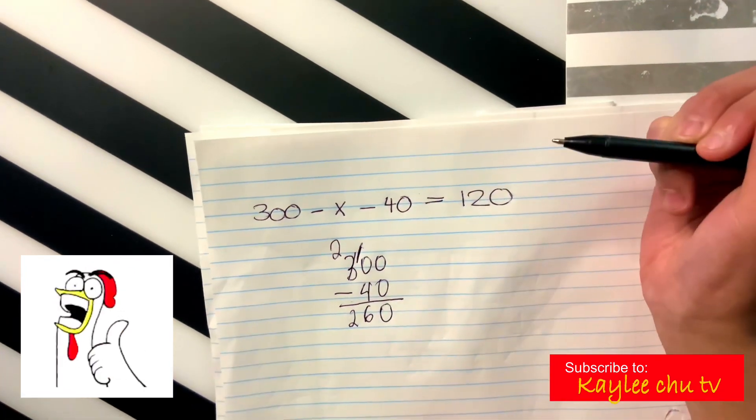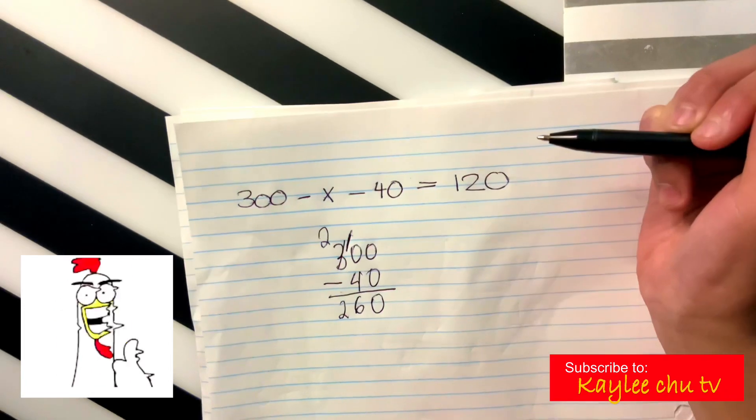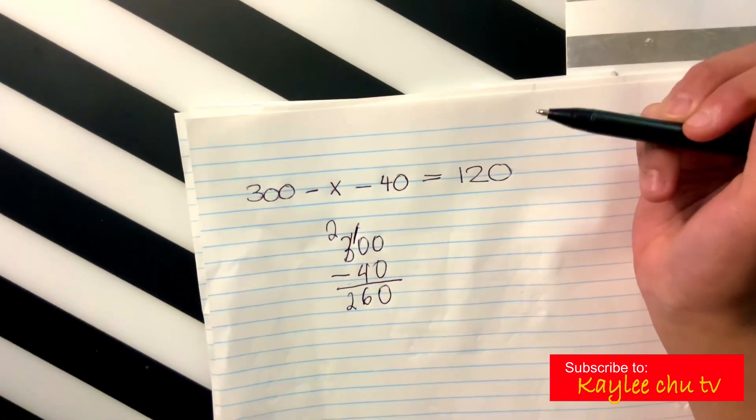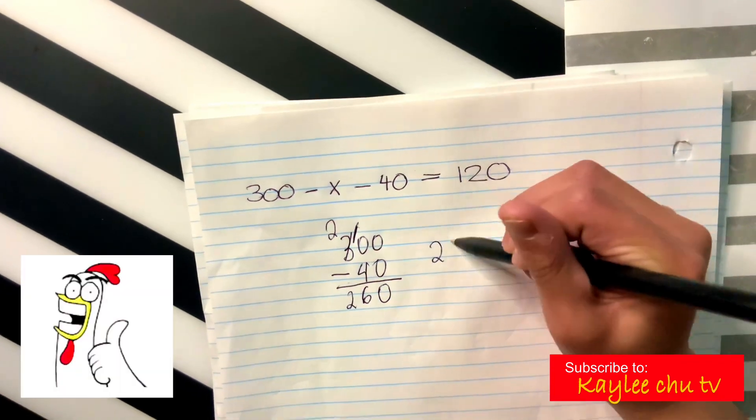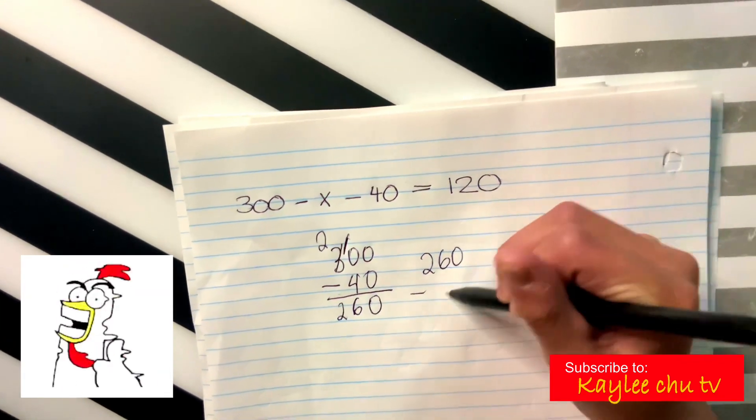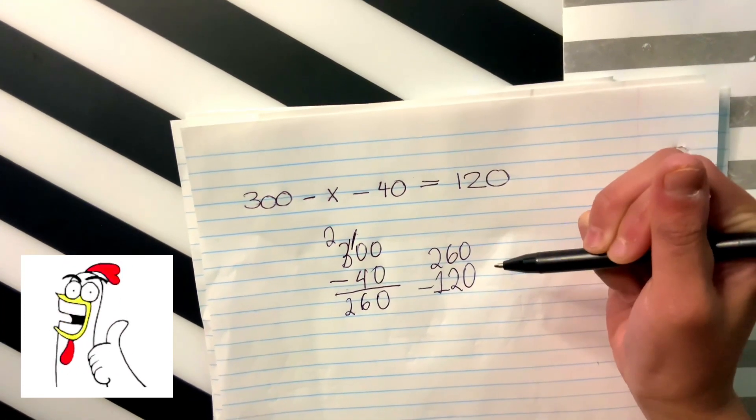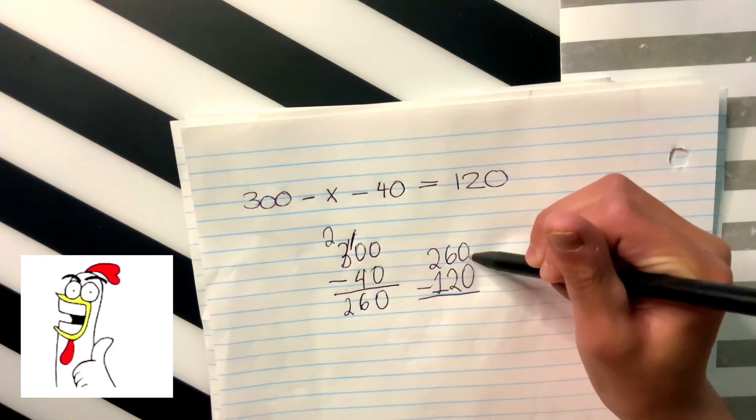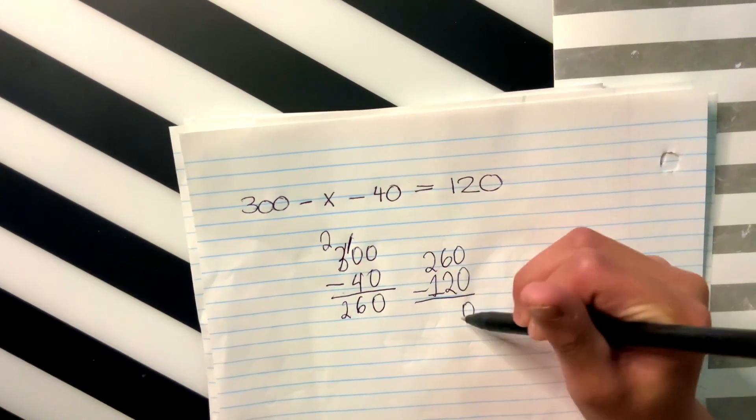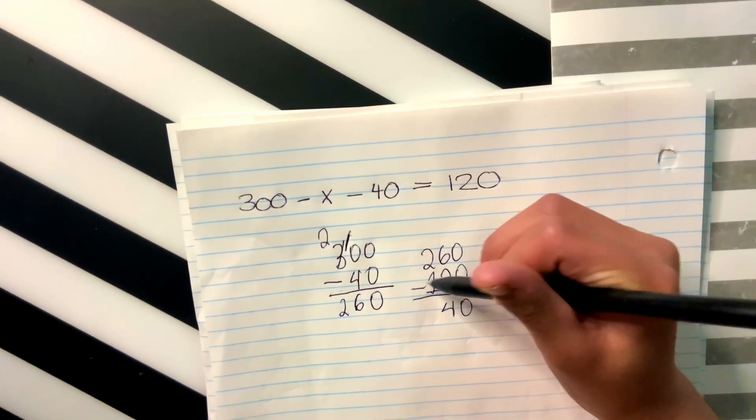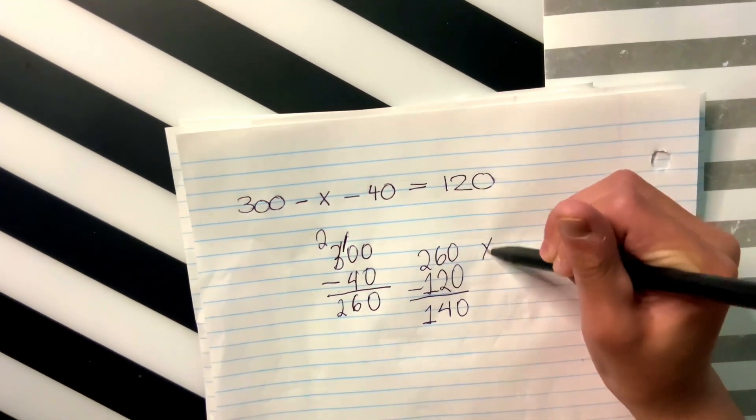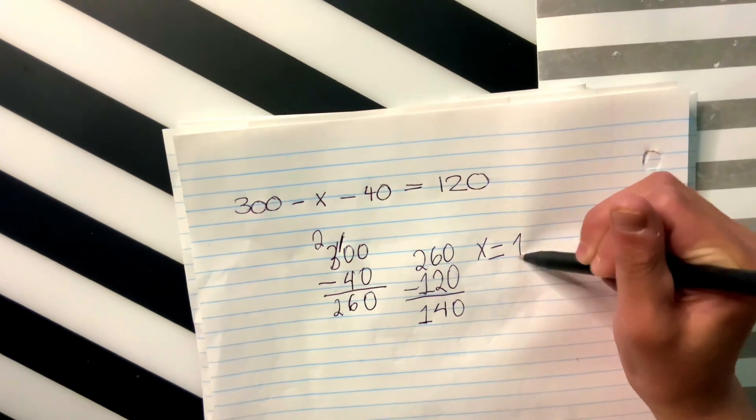You might be thinking, we're done. But we're not done since we still have 120. So we're going to get our answer. 260 minus 120. Right there. And we're going to subtract again. 0 minus 0 is 0. 6 minus 2 is 4. 2 minus 1 is 1. So basically, x equals to 140.